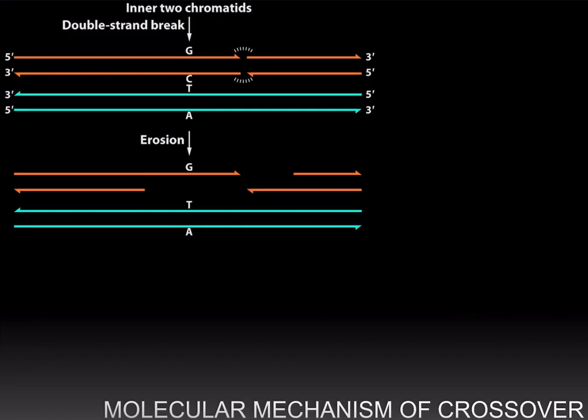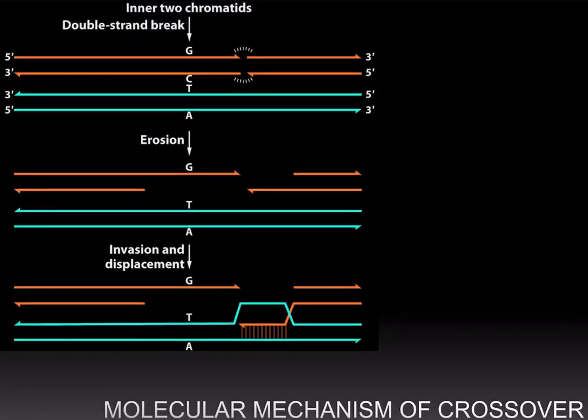And in the next step, this single-stranded DNA will invade the other non-sister chromatid and base pair with one of the strands of the other non-sister chromatid. So it's forming hydrogen bonds and base pairing with the non-sister chromatid.